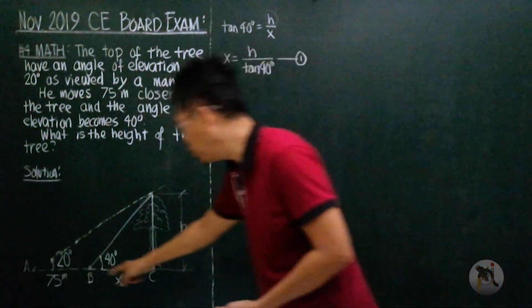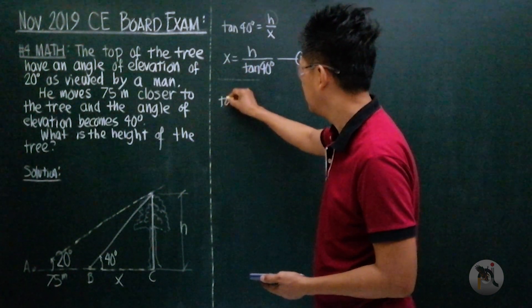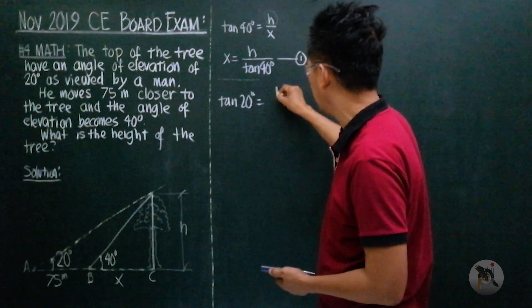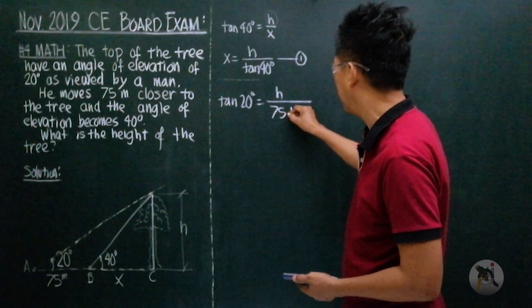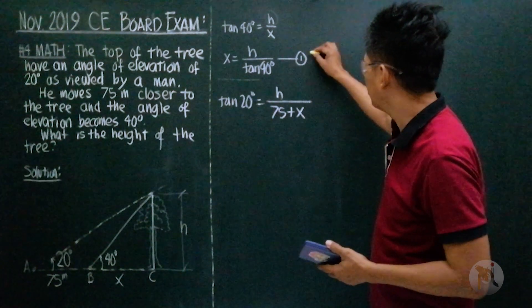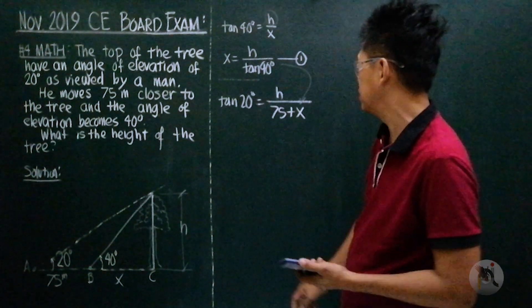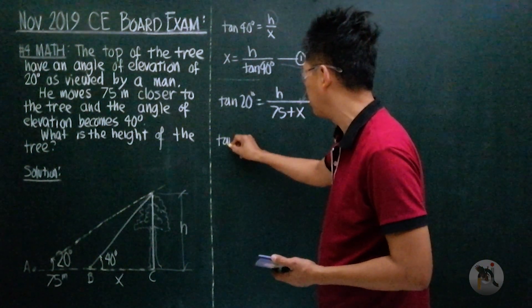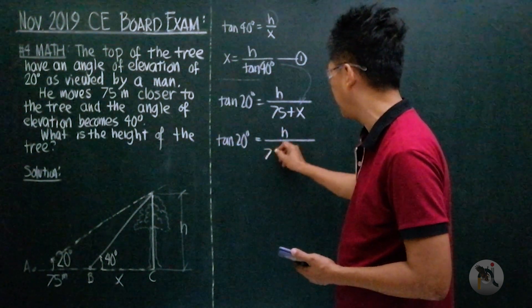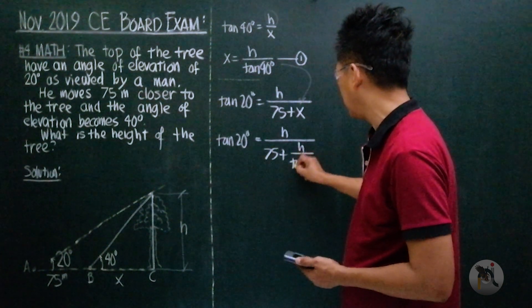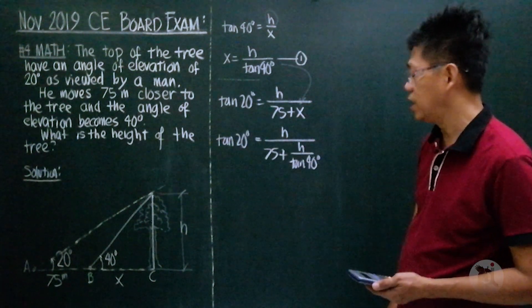Moving to this right triangle: the tangent of 20 degrees equals the opposite, which is h, over the adjacent, 75 plus x. Substituting equation one, we get: tangent of 20 degrees equals h over 75 plus h over tangent of 40 degrees. This is one equation entirely in terms of h.